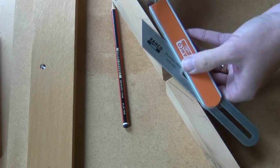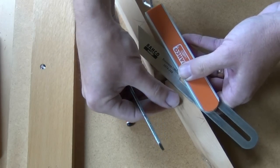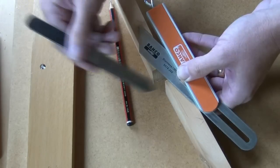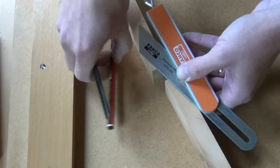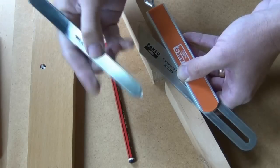Move the bevel gauge across keeping it in the same orientation to the other component, line it up with the step opposite to the face side and mark a knife line to the opposing step.